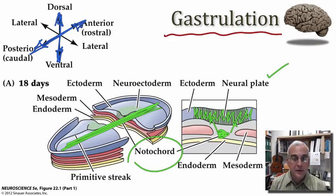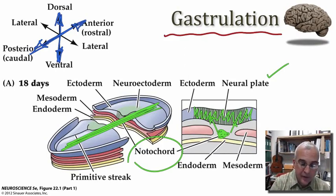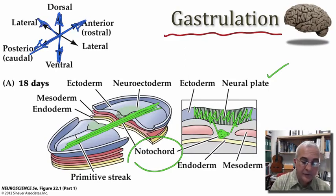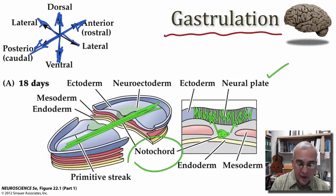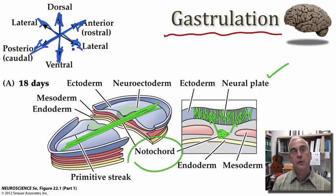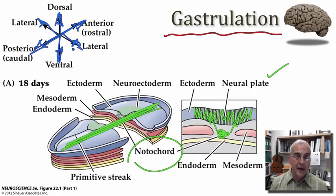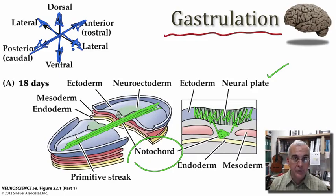The fact that the notochord is a midline structure helps to define the axis from medial out to lateral in both directions. So the presence of the notochord helps to define the bilateral axis of symmetry in the developing nervous system.